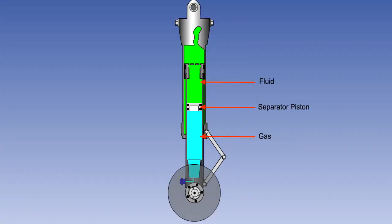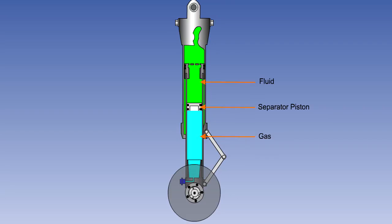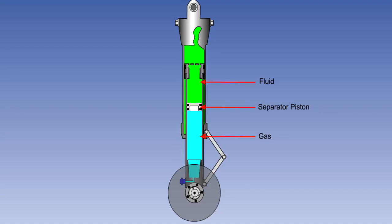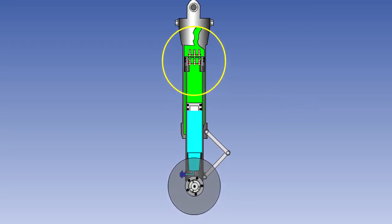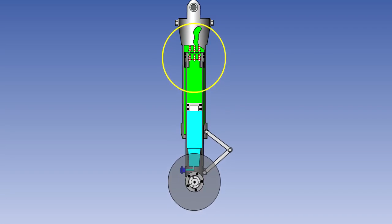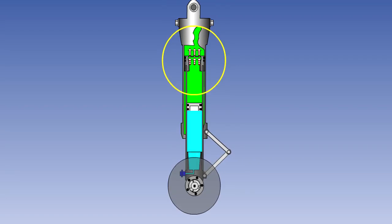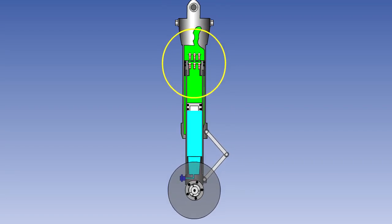The area above the separator piston is filled with hydraulic fluid and the area below is inflated with compressed gas, which may be either air or nitrogen. The separator piston is a free-floating piston which keeps the fluid and gas apart. The gas supports the weight of the aircraft on the ground, cushions bumps during taxiing and absorbs the shock on landing. The purpose of the fluid is only to dampen oscillations and control the rate of compression and extension of the cylinders. The piston connected to the lower cylinder has holes in it which restrict the flow of fluid through the piston, thus dampening the movement between the cylinders.